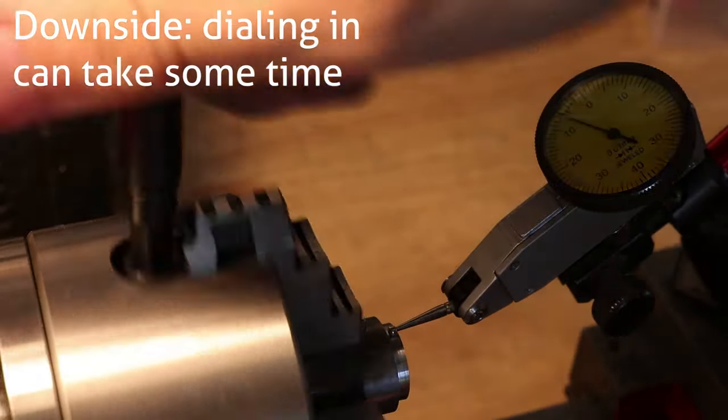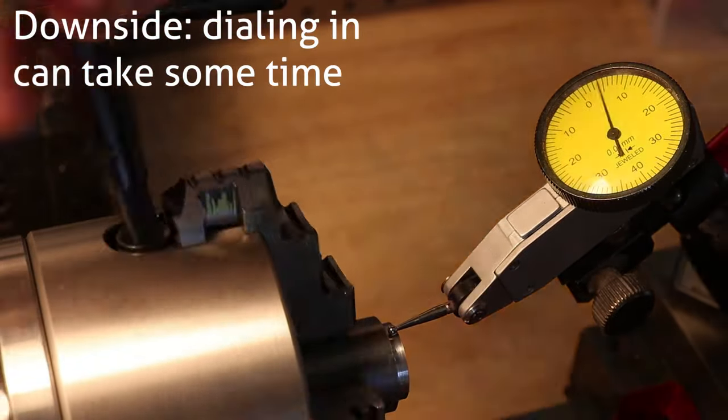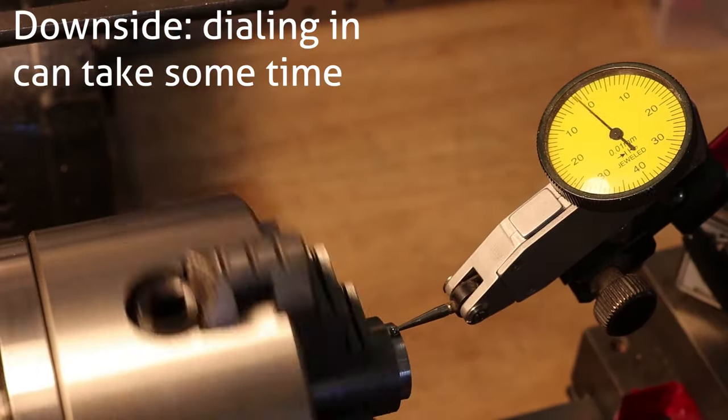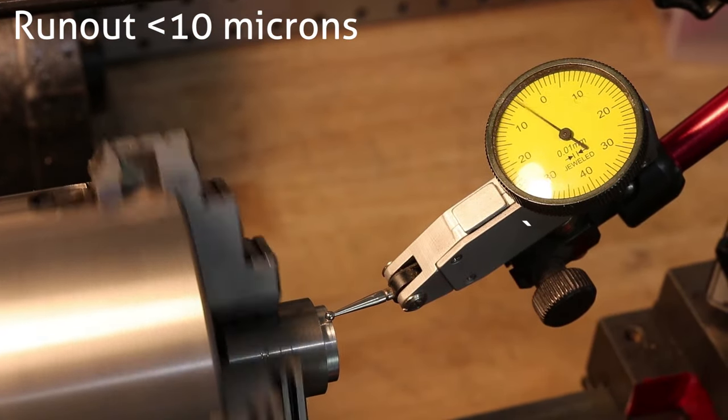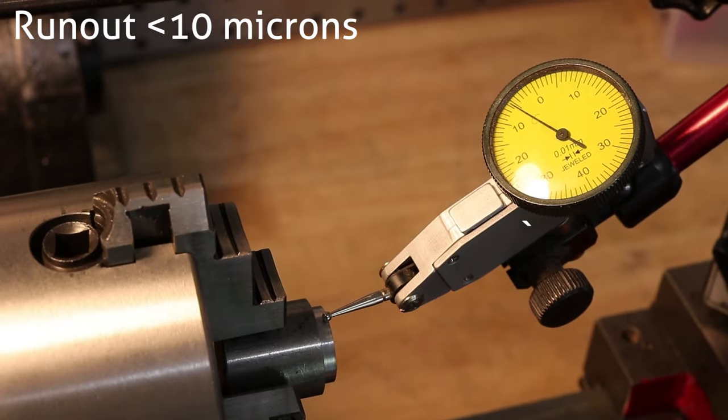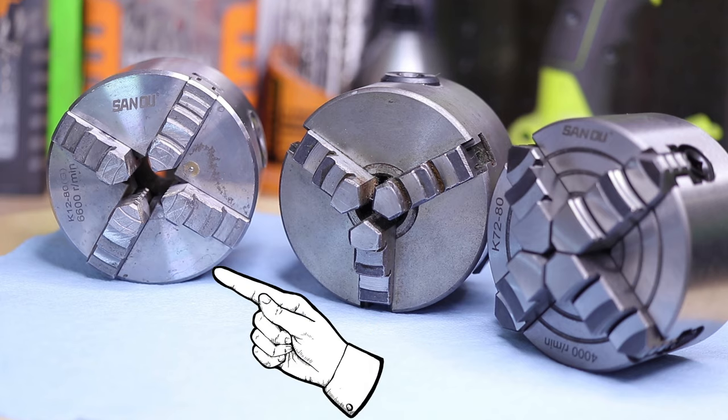An independent four jaw chuck can also cut parts that are square or rectangular, and if needed can cut eccentric cams, and thankfully replacement chucks only cost around about 50 bucks. Scroll four jaw chucks also exist, and they are great for holding square stock.